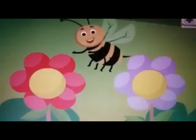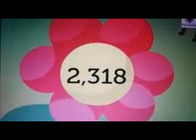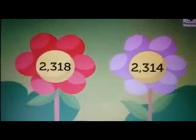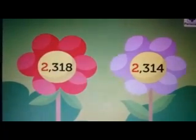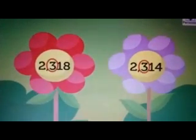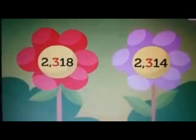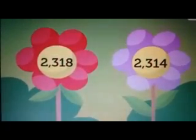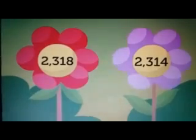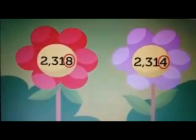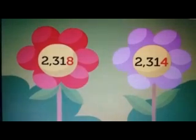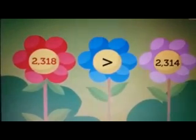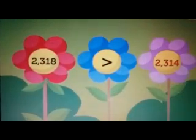Let us try one more example. Look at the numbers two thousand three hundred and eighteen and two thousand three hundred and fourteen. Both numbers have two in the thousands place, so we compare the hundreds place. Both numbers have three in the hundreds place. Both numbers have one in the tens place. So now we compare the digits in the ones place — that is eight and four. Eight is greater than four. Thus, two thousand three hundred and eighteen is greater than two thousand three hundred and fourteen.